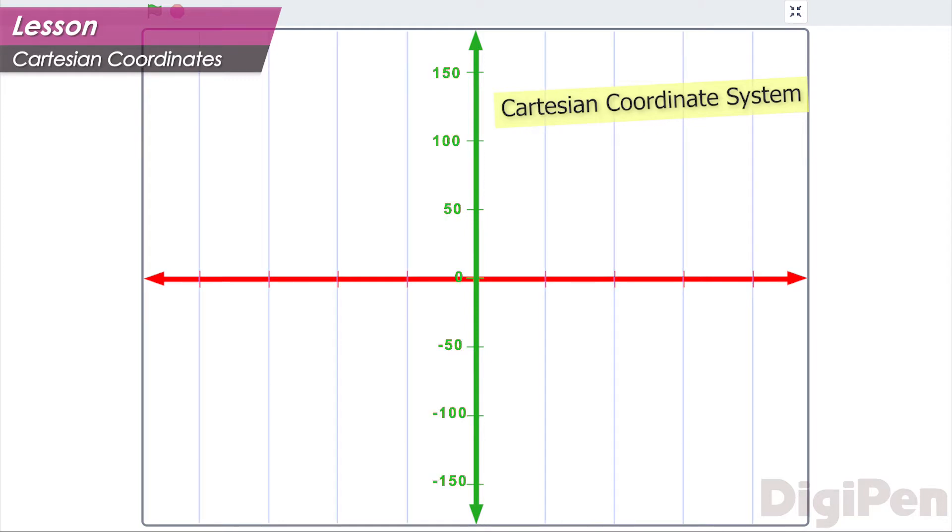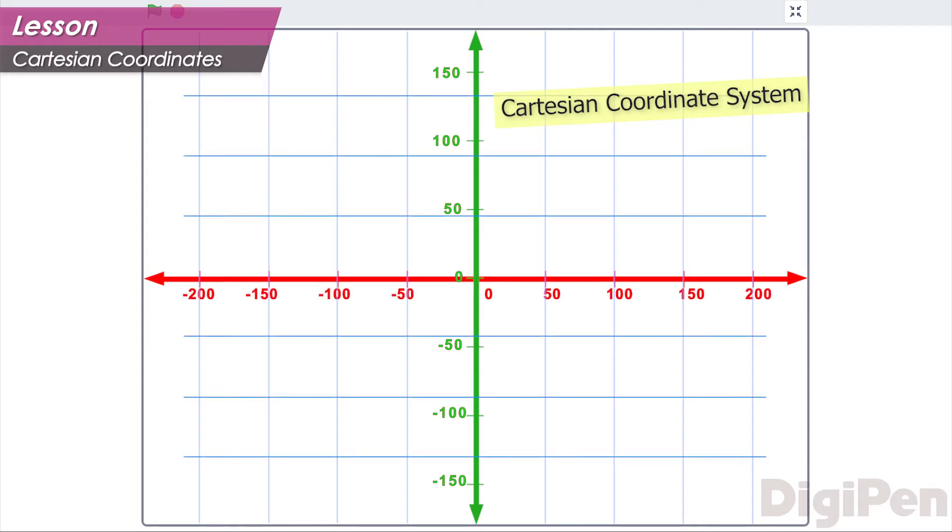In mathematics, the horizontal axis is called the x-axis, and the vertical axis is called the y-axis.